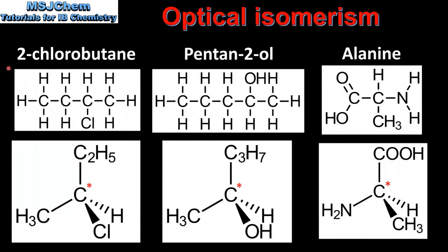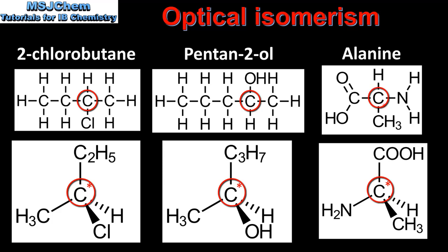Next we look at some more examples of chiral molecules. From left to right we have 2-chlorobutane, pentan-2-ol, and the amino acid alanine. In 2-chlorobutane, this carbon atom is bonded to 4 different atoms or groups. In pentan-2-ol, this carbon atom is also bonded to 4 different atoms or groups. And in alanine, this carbon atom is also bonded to 4 different atoms or groups.